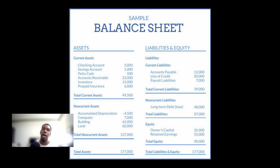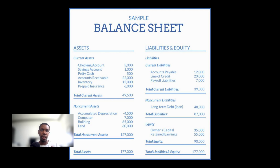The assets represent resources the company currently controls. The other side of the equation shows the total financing used to acquire those assets — either through liabilities, which are debt obligations that must be repaid, or equity, which is the total amount owners have invested including retained earnings. In a nutshell, the balance sheet informs you of a business's net worth at a specific time.